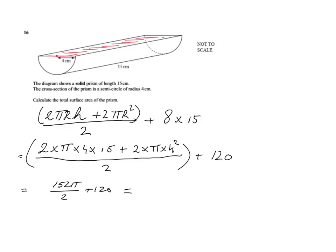Because I want to show as much working as I can. And if I work that out correctly... I should do that properly then. 152 times π equals, divide by 2 equals, plus 120.